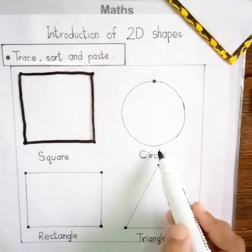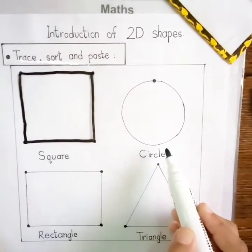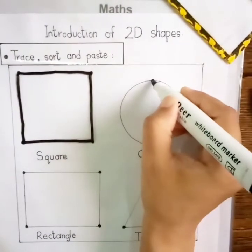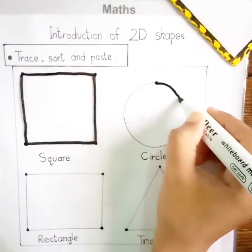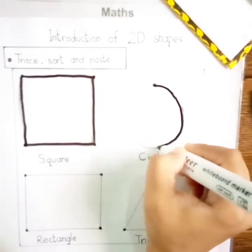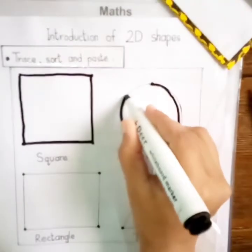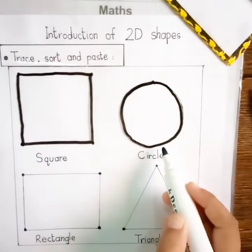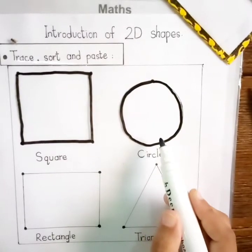Now, which shape is this? Circle. Let's draw a circle. Follow the curved lines. Circle is round and round. Circle has no sides and no corners.